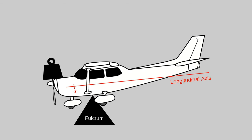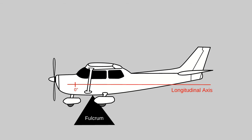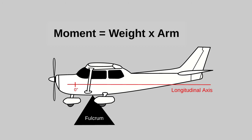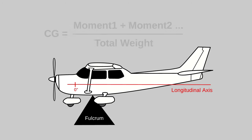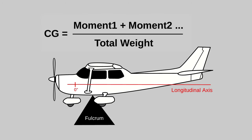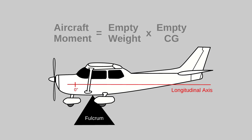This idea is captured analytically with the concept of a moment. A load's moment is the weight at that station times the associated arm, and the center of gravity is the sum of all moments divided by the total weight. The aircraft itself also has a moment, which is just the weight of the aircraft multiplied by its CG.